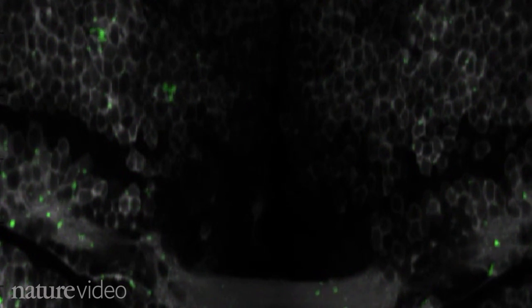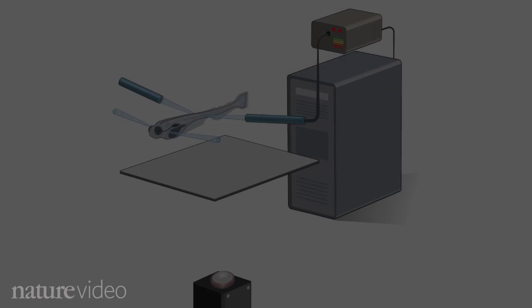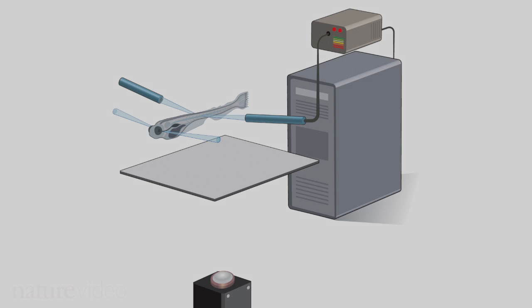First, the team tried imaging the fish while they were swimming freely, but their wiggling brains messed up the data. The matrix setup means the fish can be paralyzed.